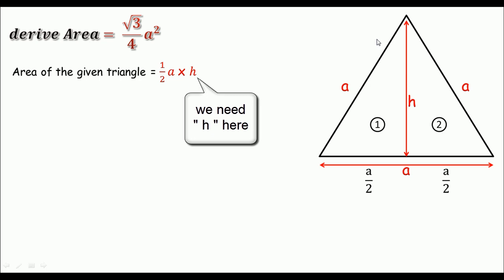Let's consider triangle one for this moment. Remember according to Pythagoras theorem the square of the longest side of the right-angled triangle will be the sum of the square of the remaining sides like h squared plus a by 2 squared.